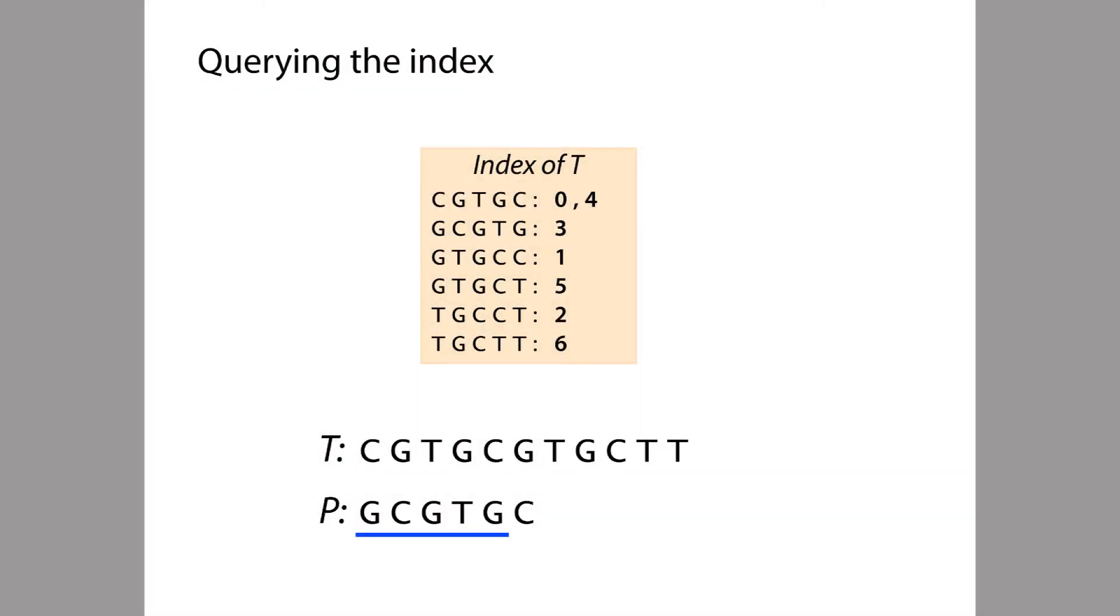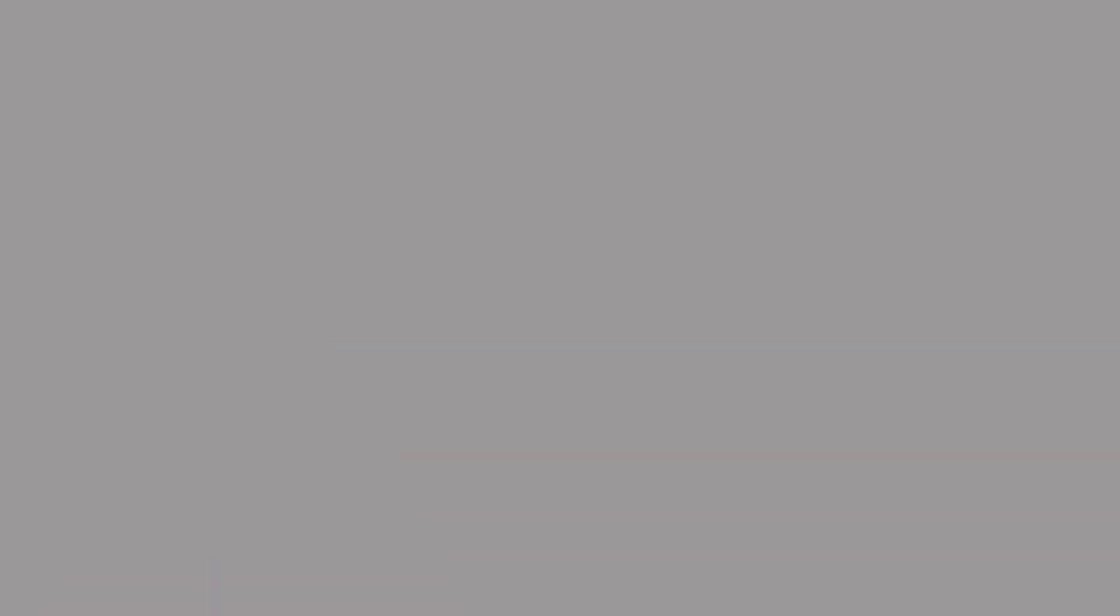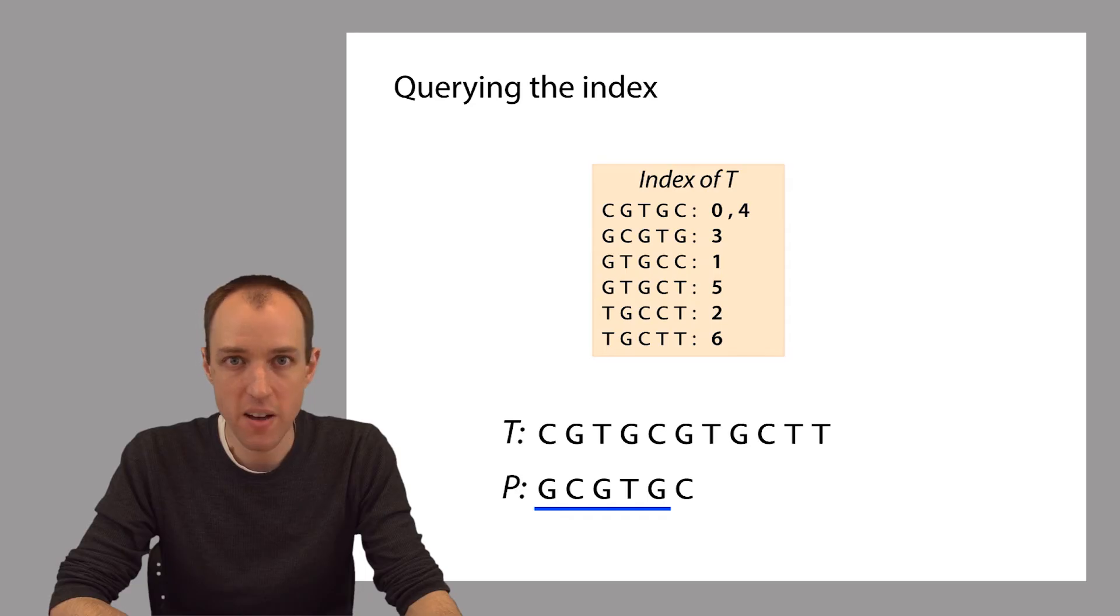We have our index. Now how do we query this index? Say we have a pattern string P. We can solve the exact matching problem. We can find all the offsets where P occurs within T with the help of our 5-mer index. Let's take the first 5-mer from P and query the index.